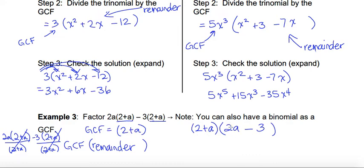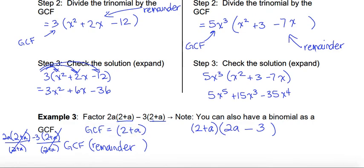You'll notice this looks like the questions from a previous lesson on multiplying binomials — and that's exactly what it is. So your greatest common factor can be a number, a combination of a number and a letter, just a letter, or sometimes a binomial. Keep all of that in mind as you progress through the lessons. If you have any questions, please post them in the discussion board on the virtual learning environment or send me an email.